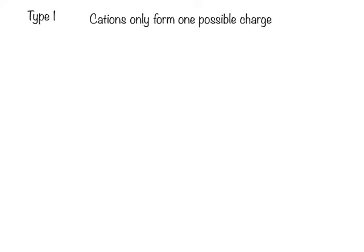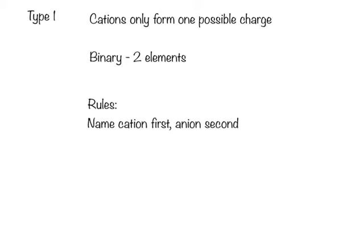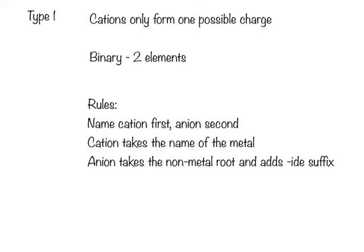First we're going to talk about binary compounds. This is two elements forming the compound, only a cation and an anion. No polyatomics necessary. The rules: we name the cation first and the anion second. The cation takes the name of the metal, while the anion takes the nonmetal root and adds IDE as a suffix. Let's take a look.